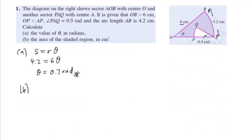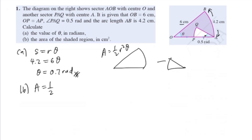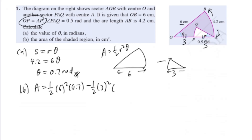For part B, find the area of the shaded region. We take the bigger sector OAB and subtract the smaller sector. The formula for area of a sector is half r squared theta. The radius for the big sector is 6, theta is 0.7. The radius for the smaller sector is 3 — because OP equals AP means 6 divided by 2 gives 3. So subtract half times 3 squared times 0.5 radians. You should get 10.35 cm squared.